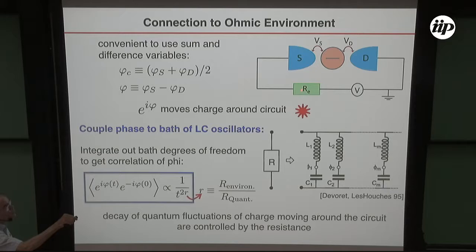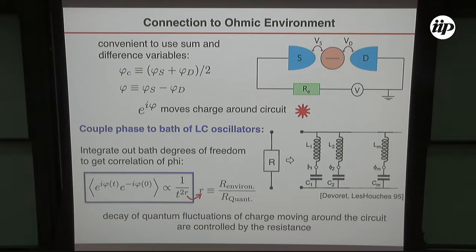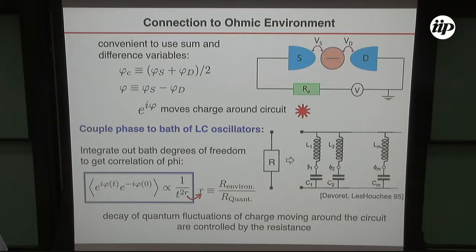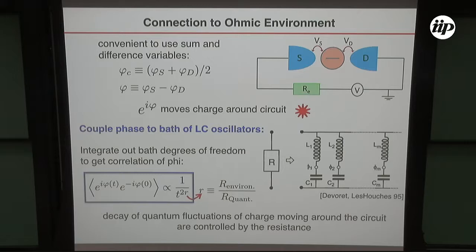We model the resistor as a collection of harmonic oscillators. The impedance and capacitance of the oscillators are chosen such that the impedance between the two dots equals that of the resistance. Harmonic oscillators are convenient because I can integrate them out, and the key quantity is the correlation function — the time decay of the fluctuations of the charge moving around the circuit. When you integrate them out, that is a power law, and the power is the environmental resistance divided by the quantum of resistance H over E squared.